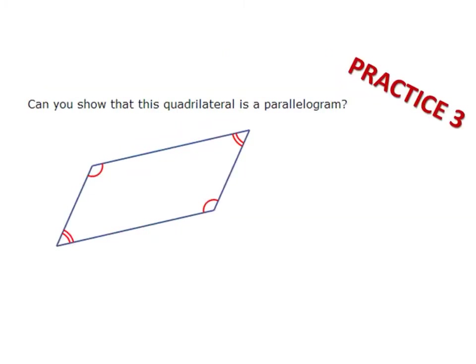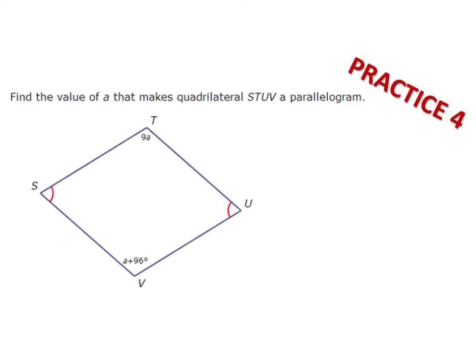Practice problem three: can you show that this quadrilateral is a parallelogram? Practice problem four: find the value of A that makes quadrilateral STUV a parallelogram. That means the opposite angles would need to be equal to each other.